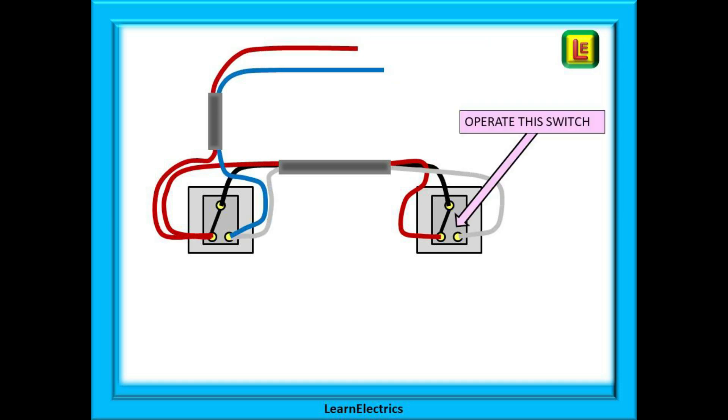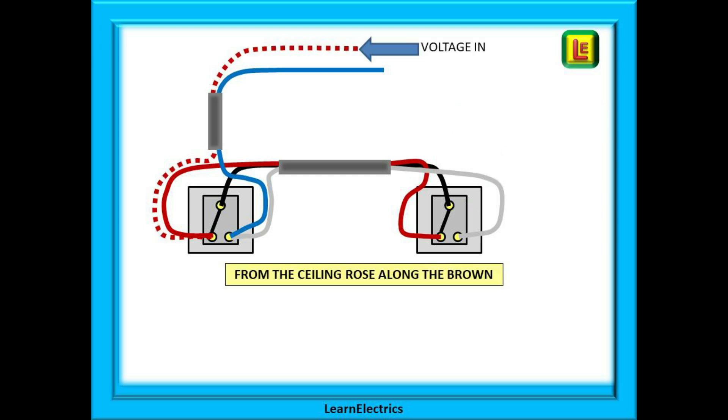If we operate the second switch, shown on the right here, what will happen to the voltage and the current flow? Voltage enters the circuit on the brown of the switch wire as before and goes to terminal L1. Through the switch and along the black to terminal L1 of switch number 2, back along the brown wire to terminal L1 of switch number 1. And the voltage cannot get to the blue wire in terminal number 2, so the circuit has no continuity. This means that there is no voltage coming out of the circuit and therefore the lamps will not light up. No continuity, no voltage, no light.